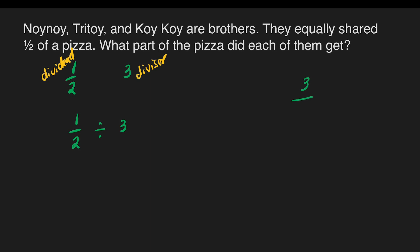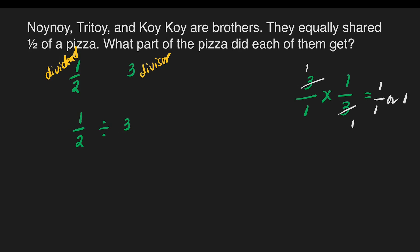So we can put 3 as 3/1. What number do we multiply to 3/1 to get a product of 1? We multiply by 1/3. We can cancel 3 and 3, giving 1/1 or 1. So the reciprocal of 3/1 is 1/3. Now we write 1/2, change the division sign to multiplication sign, and write the reciprocal of our divisor, which is 1/3.